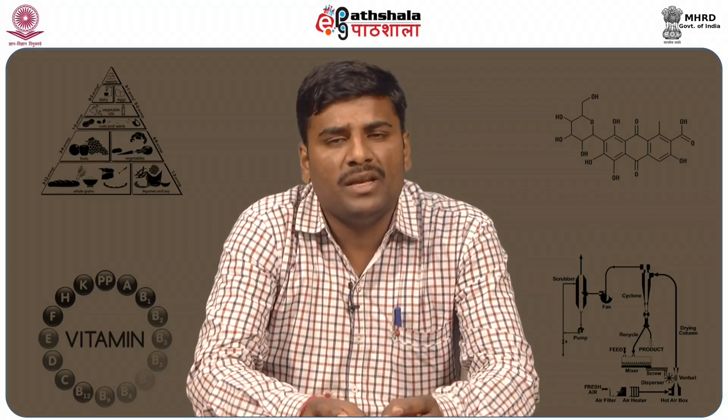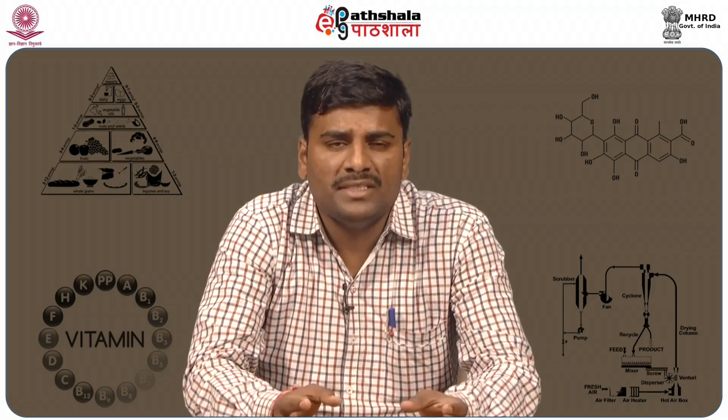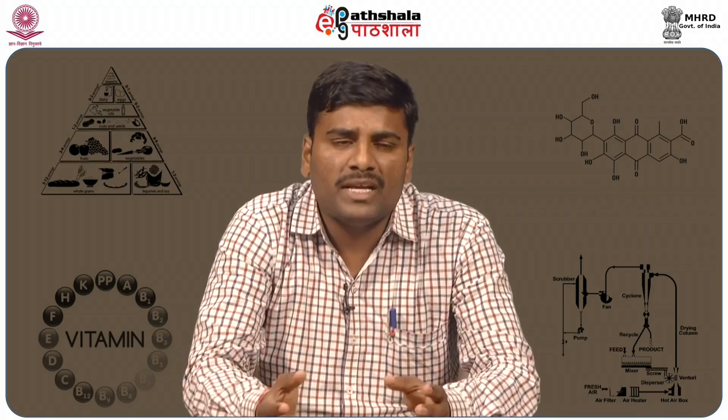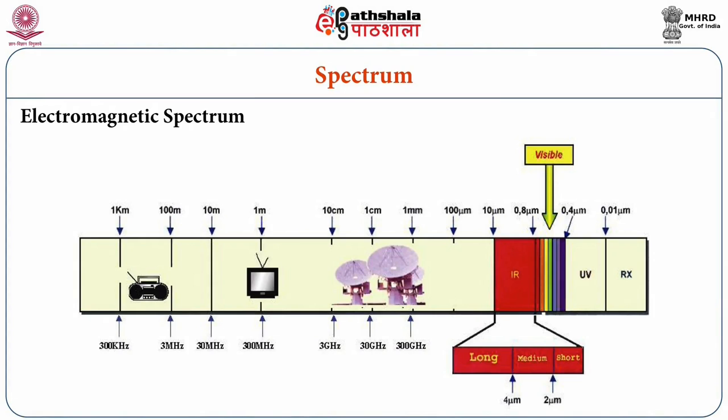The most commonly used frequencies are 915 MHz or 2450 MHz, but you can use a frequency from 300 megahertz to 300 gigahertz. If you use excess frequency it may combine with other telecommunication frequencies, causing interference. So for food applications, we prefer around 915 megahertz to 2450 megahertz, as shown in the slide.